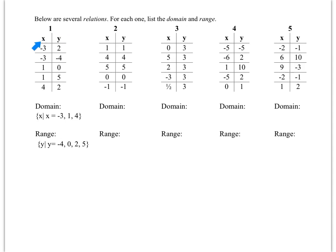If you look at the first table, the domain is just asking you to list all the x values and the range is asking you to list all the y values. Normally we put them in set notation as {-3, 1, 4}. Notice I didn't repeat negative 3 or the ones — I listed each once. But now I've added 'x such that x =' before the values. We do the same thing with y: 'y such that y =' and list them in order from least to greatest.